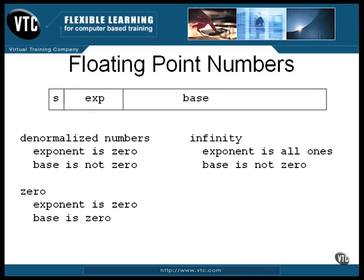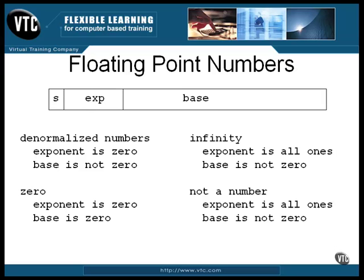With the exponent at its maximum value and the base set to zero, the number is assumed to be infinity. The sign bit, again, is part of the action. You can have either positive or negative infinity. And there's one more.